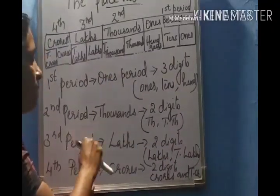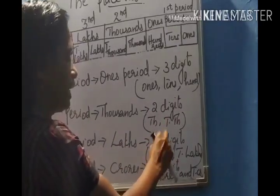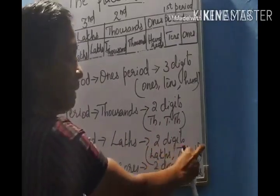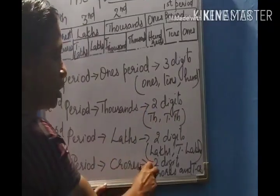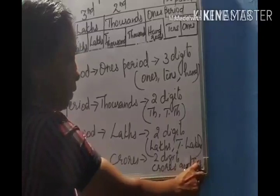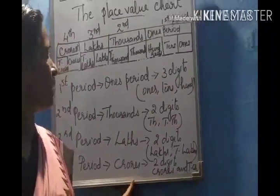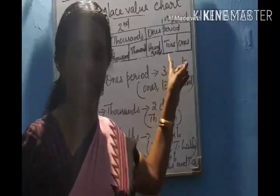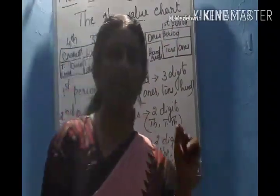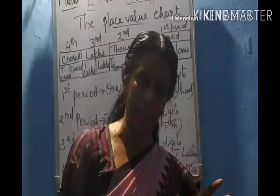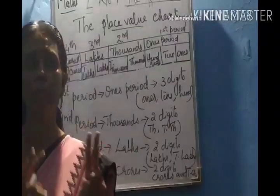Moving to the next period: the lakhs period also has two digits, that is lakhs and ten lakhs. The last period is the crores period. It includes crores and ten crores — also only two digits. Remember, only the first period, the ones period, includes three digits: ones place, tens place, and hundreds place. Remaining periods contain only two digits each.